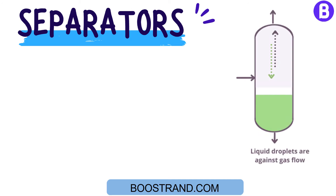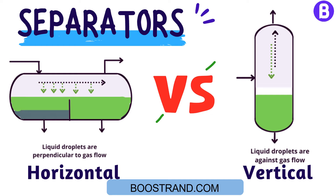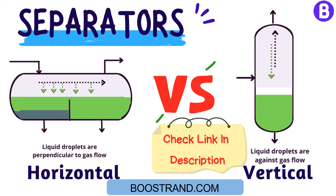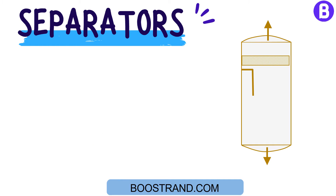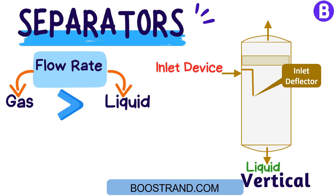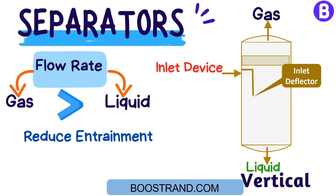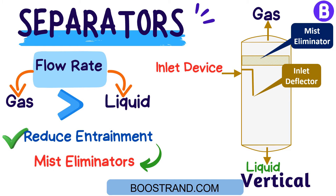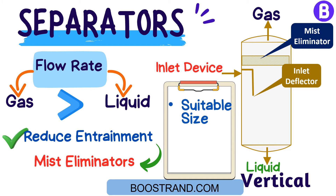Separators can be either vertical or horizontal. Usually this is specified at the beginning of the project when issuing the PFD, but it would be verified when carrying out the vessel sizing. In general, vertical vessels are used more frequently when the flow rate of gas is large compared to that of the liquid. With the help of an inlet device, the liquid is directed to the vessel's bottom and the gas moves to the top. As the gas moves to the top, it gets rid of liquid entrainment. The entrainment could be further reduced by mist eliminators. In these cases, not much liquid is expected to be collected at the bottom, so the liquid level is not expected to cause the vessel to have a too large tan-to-tan height.